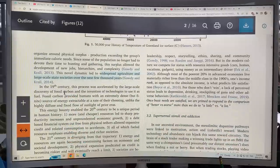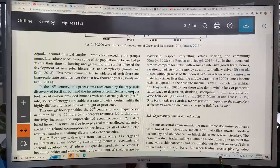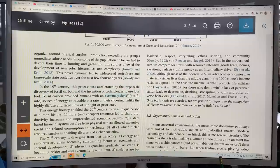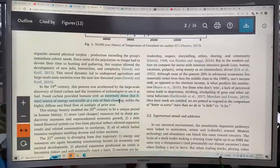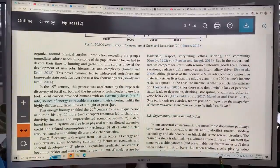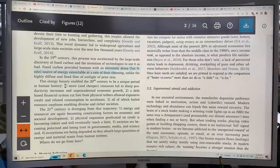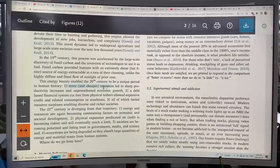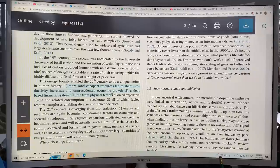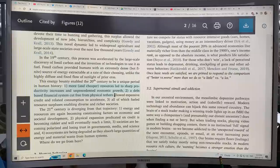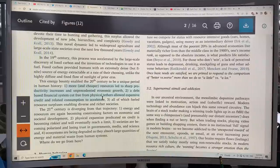So of course in the 19th century, we discovered fossil carbon and we started inventing all kinds of technologies to use it. Fossil carbon provided humans with an extremely dense but finite source of energy extractable at a rate of our choosing, unlike the highly diffuse and fixed flow of sunlight of prior errors. The energy bounty enabled the 20th century to be a unique period in human history. So 1900 to 2000, more and cheaper resources led to sharp productivity increases, unprecedented economic growth, a debt-based financial system cut free from physical tethers. No longer you could just print money and create debt. You didn't have to have anything to back it up in vaults, like no gold in vaults, for example.